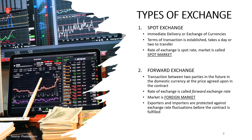When looking at global markets and types of exchange, it falls into two categories: spot exchange and forward exchange. A spot exchange is the immediate delivery or exchange of currency happening in real time; the terms are established and it takes a day or two to transfer funds, at a rate called the spot rate or spot market. A forward exchange is a transaction between two parties set in the future at a domestic currency price agreed upon in a contract, called the forward exchange rate, protecting exporters and importers against exchange rate fluctuations before the contract is fulfilled.